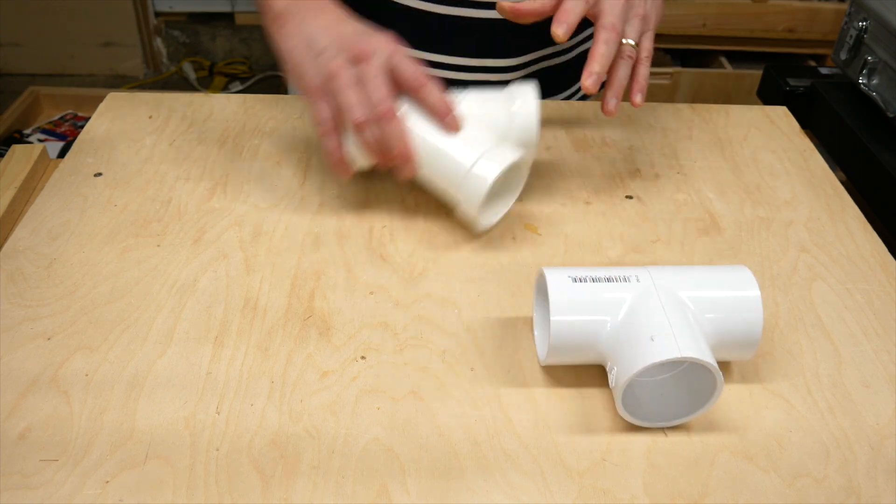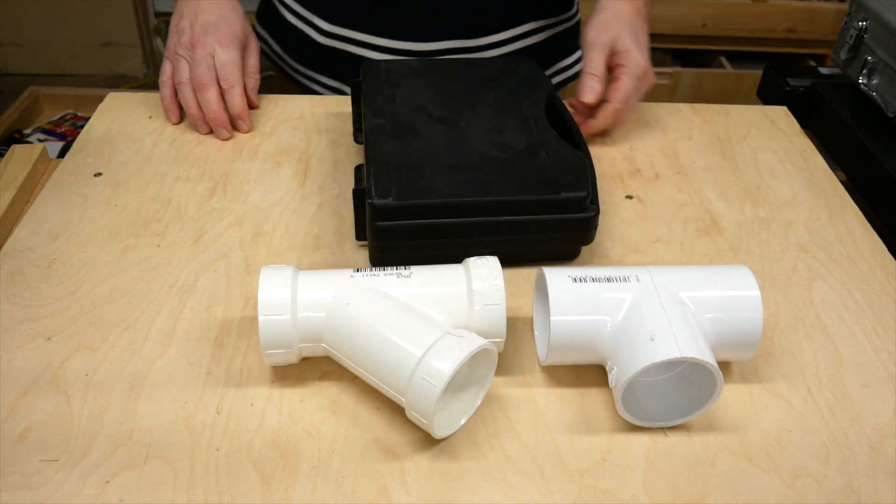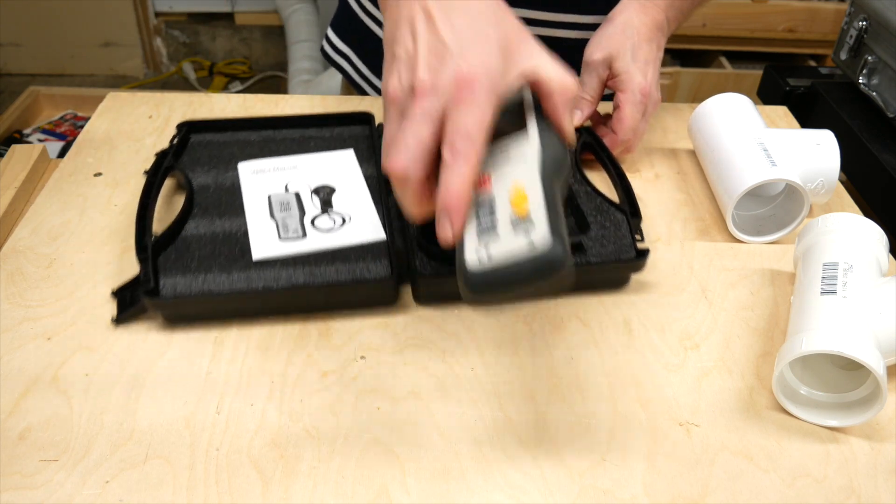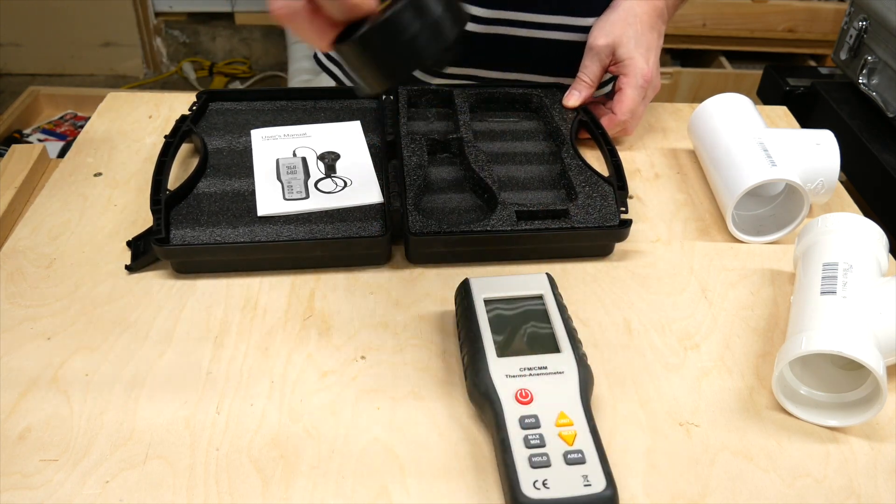I'm going to compare this to this, using this. Actually what's inside this, which is an anemometer. It measures air volume and speed, using this fan.